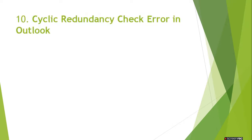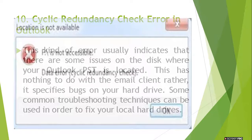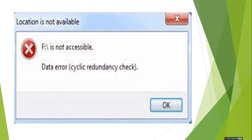Our last error is the cyclic redundancy check error in Outlook. This kind of error usually indicates that there are some issues on the disk where your Outlook PST is located. This has nothing to do with the email client; rather, it specifies bugs on your hard drive. The solution to this error is to change the location of your Outlook file.